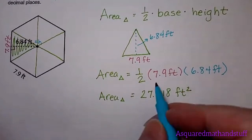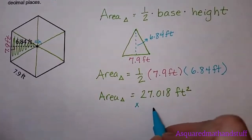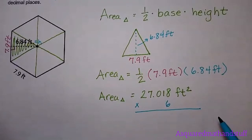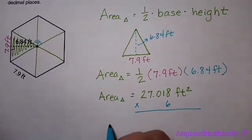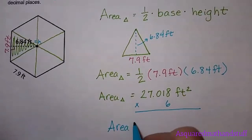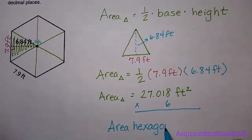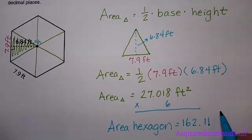So let's take this 27.018, multiply it by six, and we will get a total area. So the area of our polygon—and this is a hexagon—is equal to 162.11. We wanted to round this to two decimal places according to the directions, and since it's area, it's our unit squared, so 162.11 feet squared.